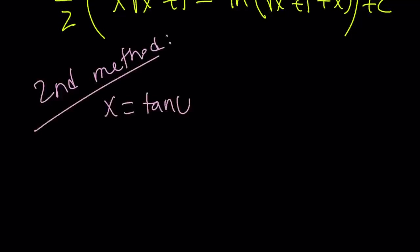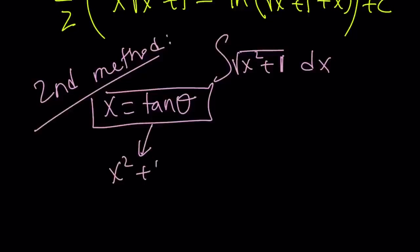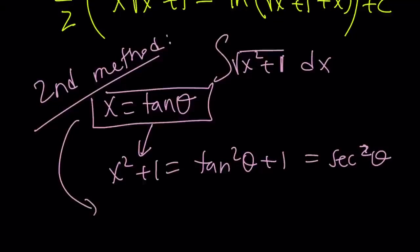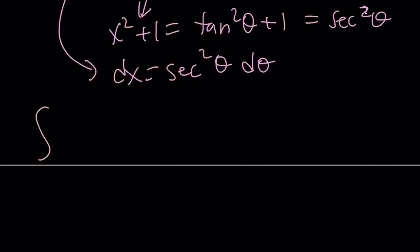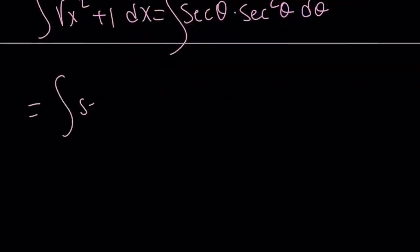The second method: x equals tangent theta. Whenever you see the square root of x squared plus 1, x equals tangent theta is the appropriate trigonometric substitution. x squared plus 1 is tangent squared plus 1, which is secant squared. And dx — if x is tangent theta — dx is secant squared theta d theta. Putting all of that together inside the integral, you get secant theta times secant squared theta d theta, which gives the integral of secant cubed theta d theta. I'm not going to go over that because I already made a video — you can go ahead and see that video.